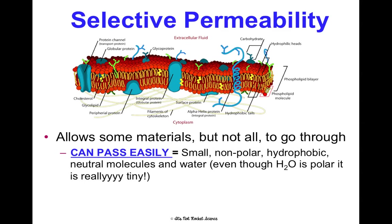Neutral molecules can also pass through easily because they tend to be nonpolar. And water — even though H2O is polar, it's so tiny that it can pass through really easily.